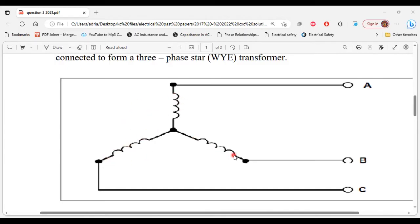But when they are joined together they form a three phase transformer based on the connection here. So this would be classified as a star connection transformer based on our Y connection transformer. All right, so that's it for part two of C.